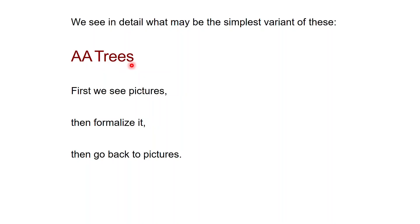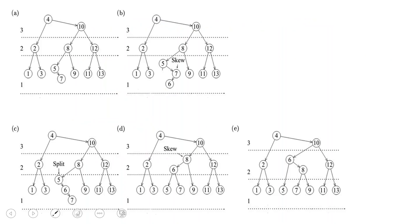We're going to give the details of the rebalancing operations in AA trees. So let's start by seeing some pictures of what AA trees are, then we can formalize what the trees are and then we can go back to the pictures. So here is how an AA tree is going to look like. As you can see it's a binary tree.